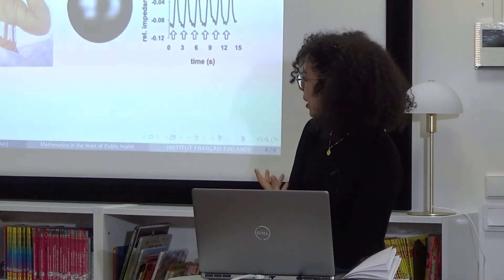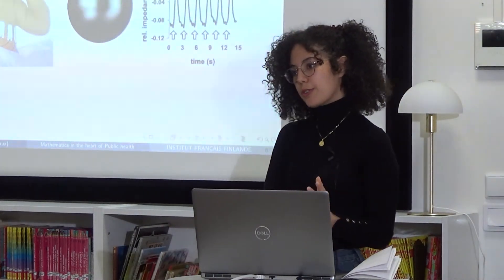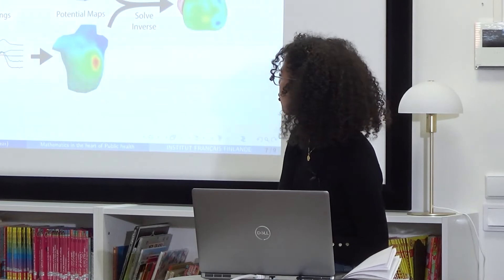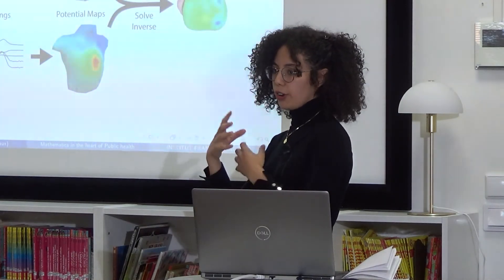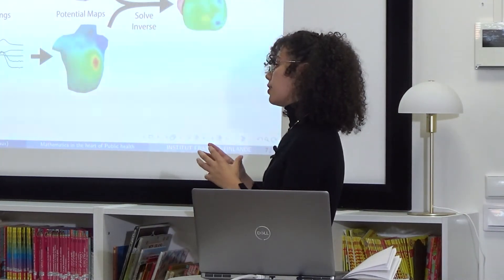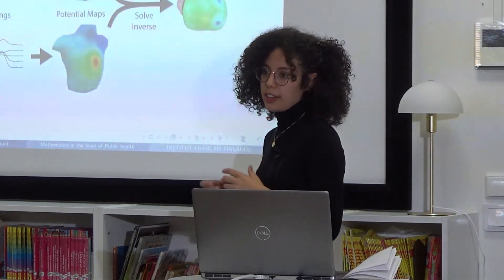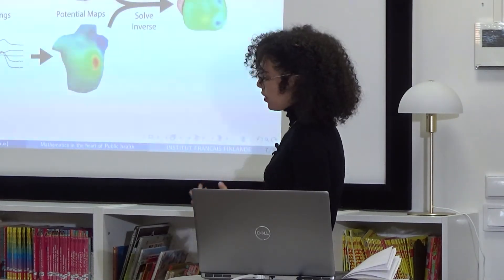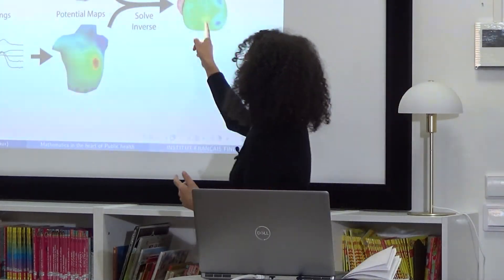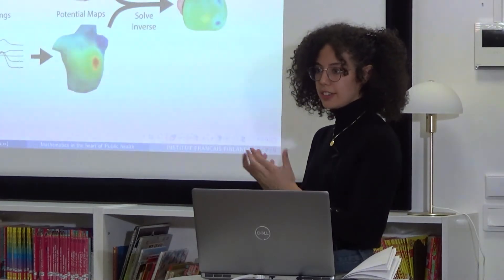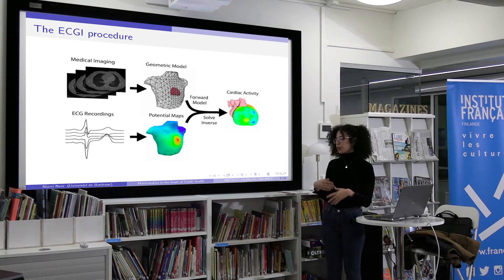The idea behind EIT was to help with the ECGI problem, because for ECGI we need to know the geometry, where the heart is placed, and as much information as possible. Knowing the conductivity of the organs can help us figure out more information about the heart. So EIT can also combine with ECGI to help recover more information on the heart.